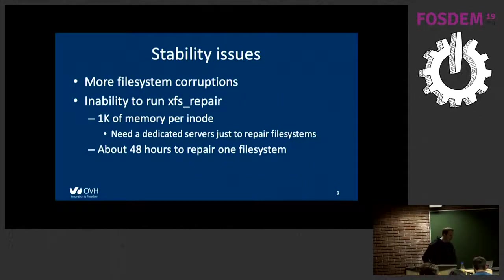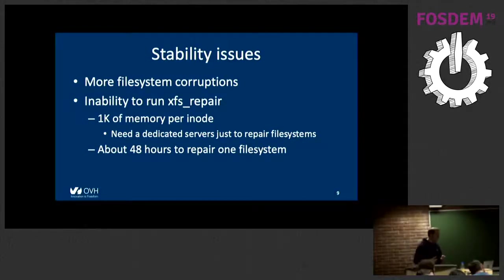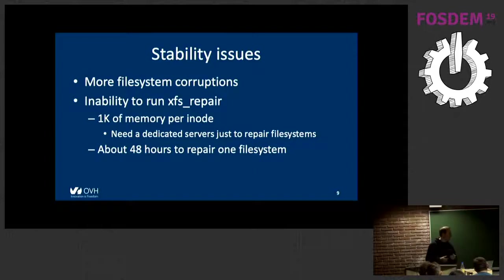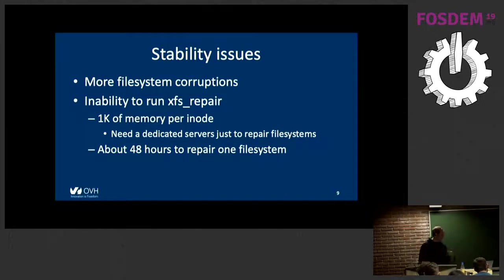We also had stability issues — to be fair, on an older kernel; we were running 3.14 and it has since improved. But we had a lot of file system corruptions we were totally unable to repair on production servers. When you run XFS repair, it allocates one kilobyte of memory per inode, so XFS repair couldn't run on 64 gigabytes of memory. We kept one server with a lot of memory just to run XFS repair — we'd take the disk out, run XFS repair, and put it back. One XFS repair was taking about two days to run.